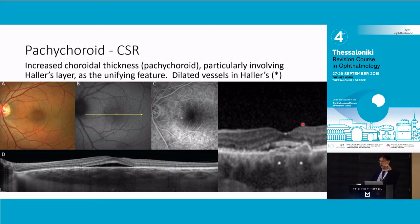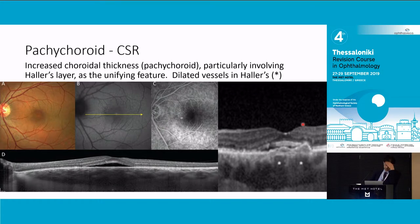Now if you have an SLO-based ICG, you will actually see the plaques, and also quite dilated choroidal vessels in the very late frames. Based on that, various groups - the New York group and others - started looking at the choroid a lot more and realized that, given the hypothesis that CSR was related to a choroidal permeability problem, many of these patients had thick choroids, or pachychoroid - which is Greek.